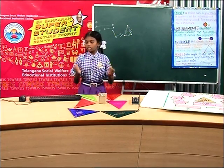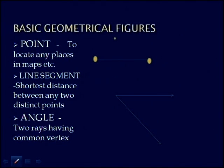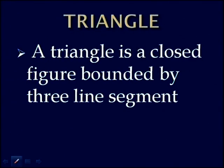Let us see on the screen. A point is used to locate any place on maps. A line segment is the shortest distance between any two distinct points. An angle is formed by two rays having a common vertex. A triangle is a simple closed figure bounded by three line segments.